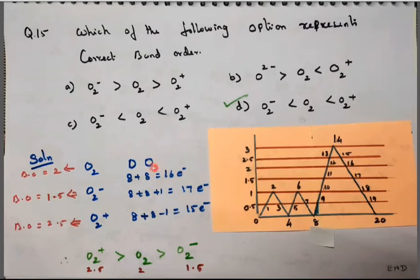So O2 is nothing but 8 plus 8, 16 electrons. So if it is 16 electrons, the bond order is 2. And O2²⁻, 8 plus 8 only 1 minus O plus 1, 17 electrons. If it is 17 electrons, bond order is 1.5. Then O2⁺, 8 plus 8 minus 1, 15 electrons. If it is 15 electrons, the bond order is 2.5.